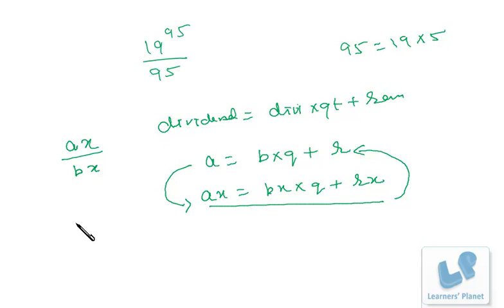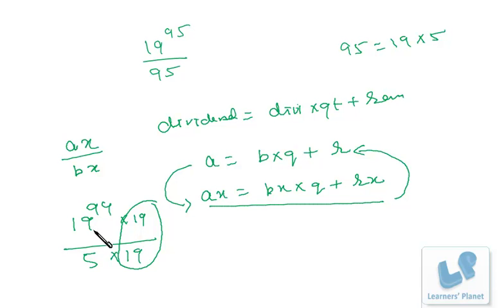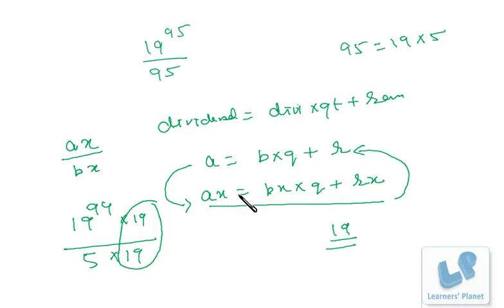Applying this: 19^95 = 19^94 × 19, and 95 = 5 × 19. The common factor X is 19, so A = 19^94 and B = 5. I find the remainder of 19^94 divided by 5. When dividing by 5, only the unit digit matters. The unit digit of 19^94 is 1, since even powers of 9 always end in 1. So R = 1, and the final remainder is R × X = 1 × 19 = 19.